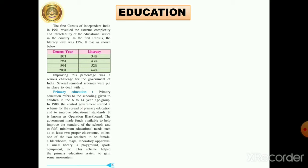In 1971, there was only 34% literacy of the whole population of India. After 10 years, in 1981, the counting was done and it rose to 43%. Then after 10 more years it rose to 52%. So the rise in the literacy rate was very slow. And then in 2001, it became 64% of our Indian population that was educated.